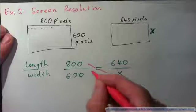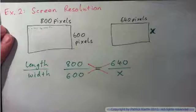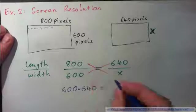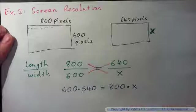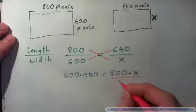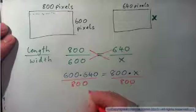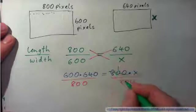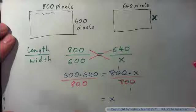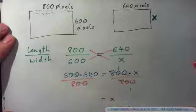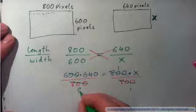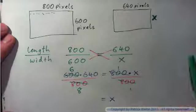So, we could cross multiply, and we get 600 times 640 equals 800 times x. And instead of multiplying these and then dividing by 800, I like to divide by 800 at this point. Because it makes life a little bit simpler. 800 cross cancel. And I get x on the right hand side. And I can divide these two by 100, and see the zeros will just cross off. Because this will be 6, that will be 8. So, divide each of those by 100, right?